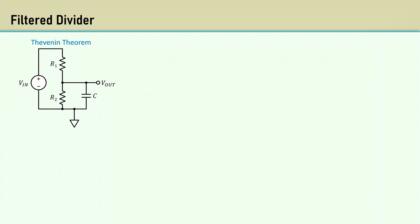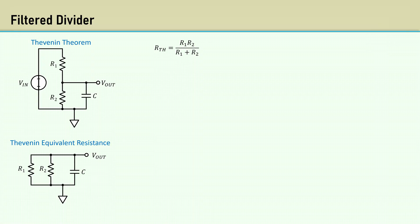We can use our friend, the Thevenin theorem, to do the circuit analysis. The first thing to do is to short the voltage source. That makes R1 in parallel with R2. Then the R-thevenin equivalent resistance is those resistors in parallel, which is the product over the sum equation.